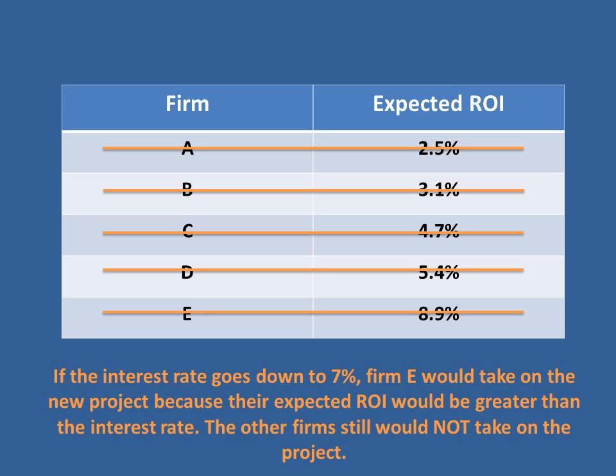Let's lower that interest rate to 7%. Firm E, since their expected return on investment is 8.9%, would now take on the new project. But the rest of the firms would continue not to take on the project, because the interest rate is still higher than what they expect to get back.